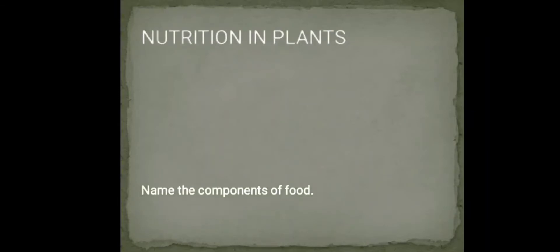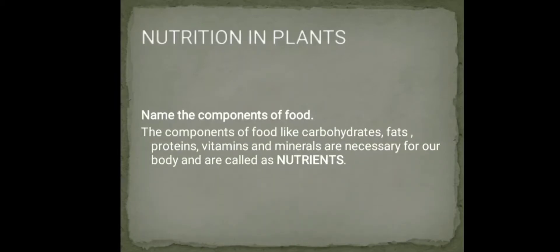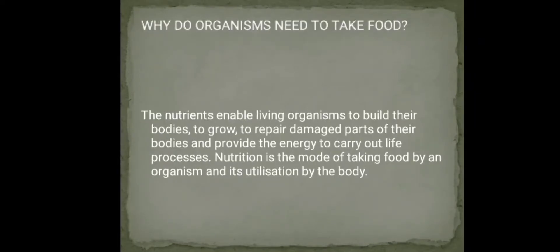Nutrition in plants. As we remember from class 6, the components of food are carbohydrates, fats, proteins, vitamins, and minerals. These are necessary for our body and are called nutrients. The nutrients available enable living organisms to build their bodies, to grow, and to repair damaged parts of their bodies.